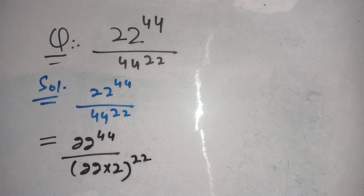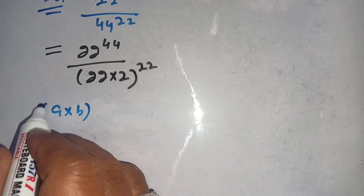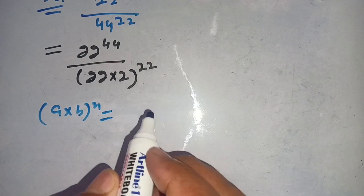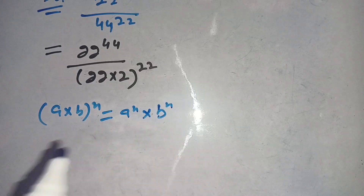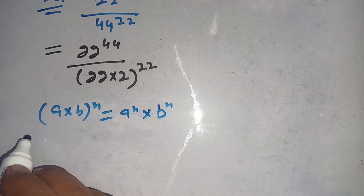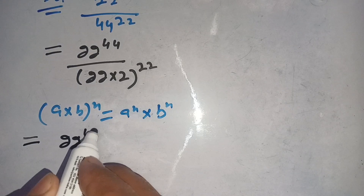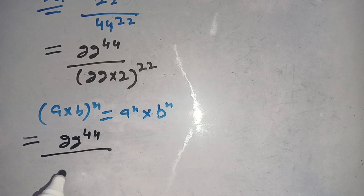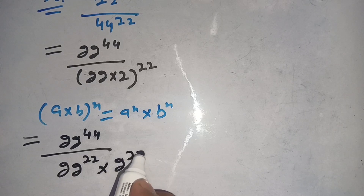Before moving to the next step, we know that (a times b) whole power n is equal to a power n times b power n. Now using this identity in the denominator, our next step will become 22 power 44 divided by 22 power 22 times 2 power 22.